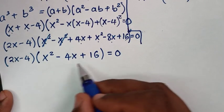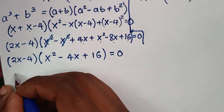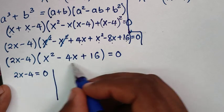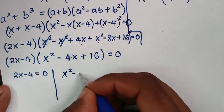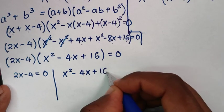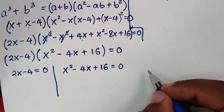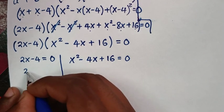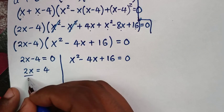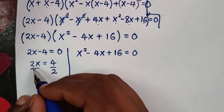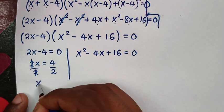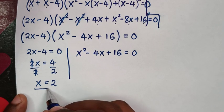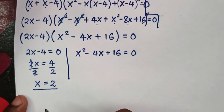From here we have two solutions. The first solution is 2x minus 4 equals 0, and the second solution is the quadratic equation x squared minus 4x plus 16 equals 0. From the first solution, 2x equals 4, divide both sides by 2, so x equals 2. This is the first value of x.